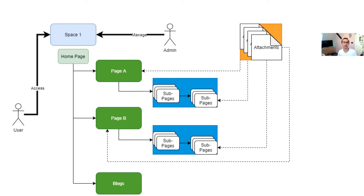Confluence is a documentation system and it's based on pages — each time you want to create documentation you will have to create a page. A page belongs to a space, which you can compare to a project in Jira. For example, you'll have a space for Product A and another for Product B. Users can have access to one or many spaces, and each space can have multiple pages. At creation time, a space will have at least one page called the home page, which is the landing page and the first parent page of the space.